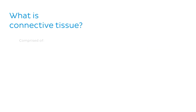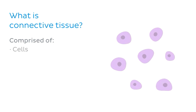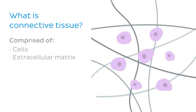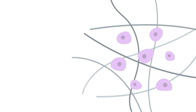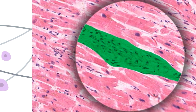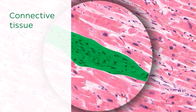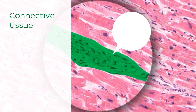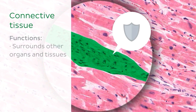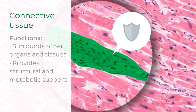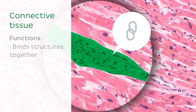Generally, connective tissue is comprised of cells and something called an extracellular matrix. Here we see a micrograph showing connective tissue highlighted in green. Connective tissue functions to surround other organs and tissues, provides structural and metabolic support, binds structures together, and even assists in tissue repair.